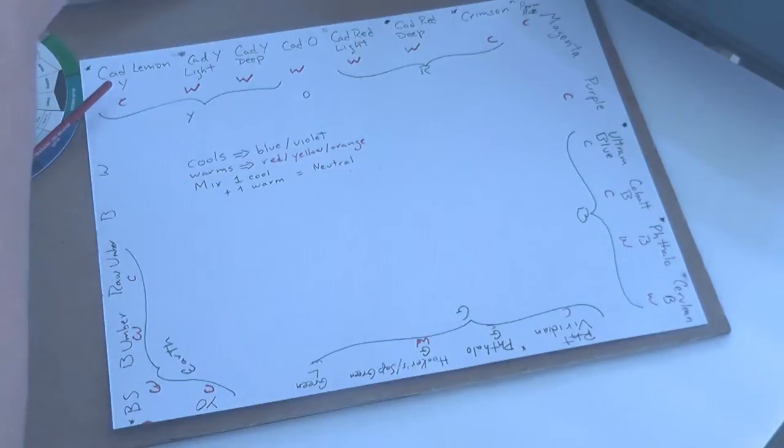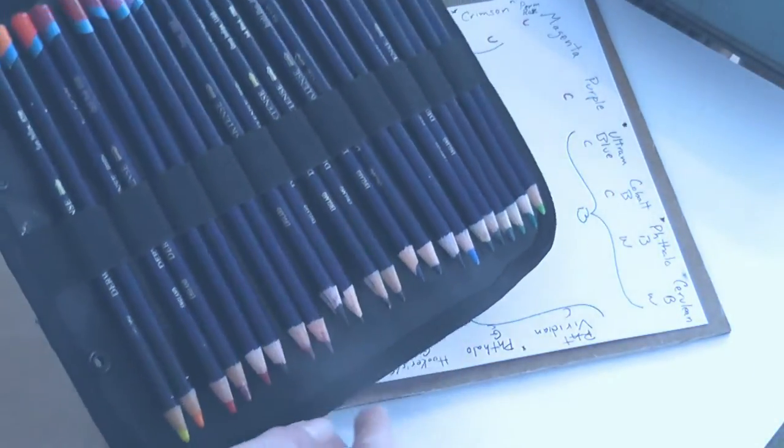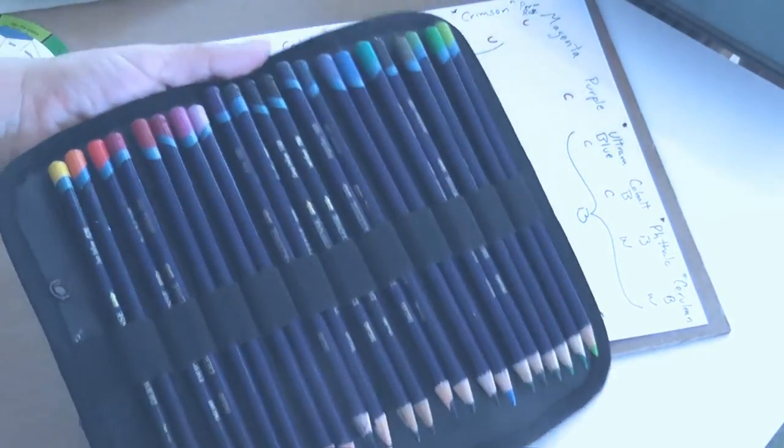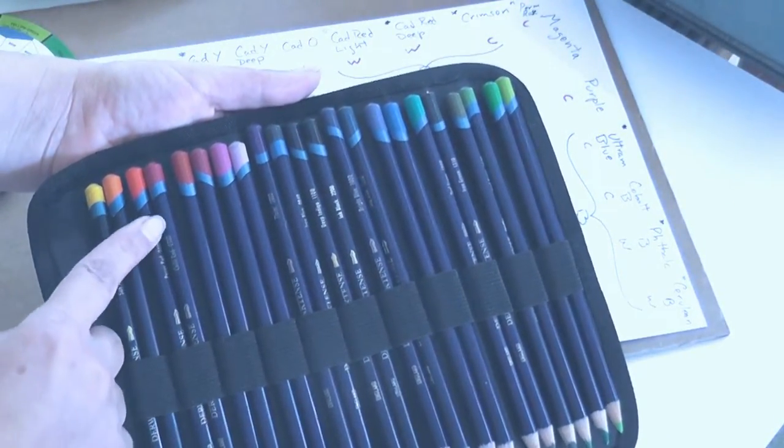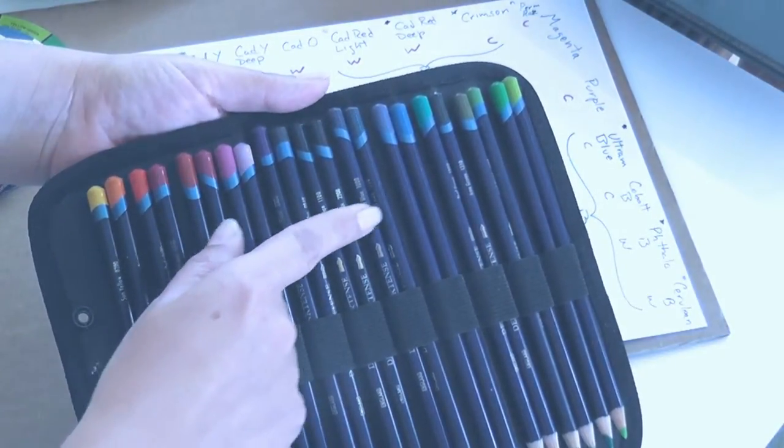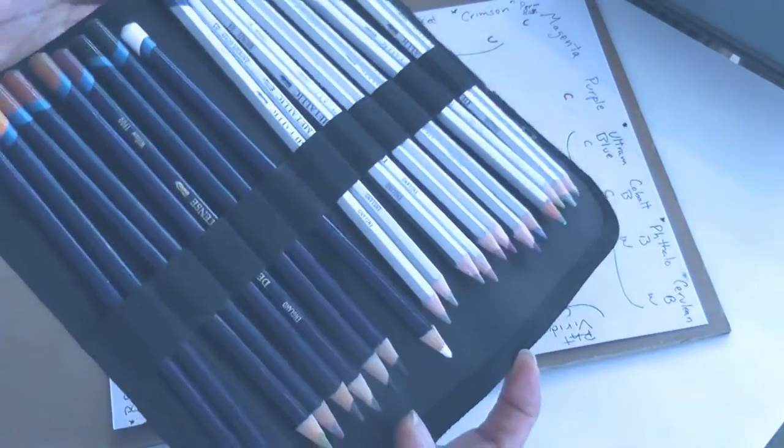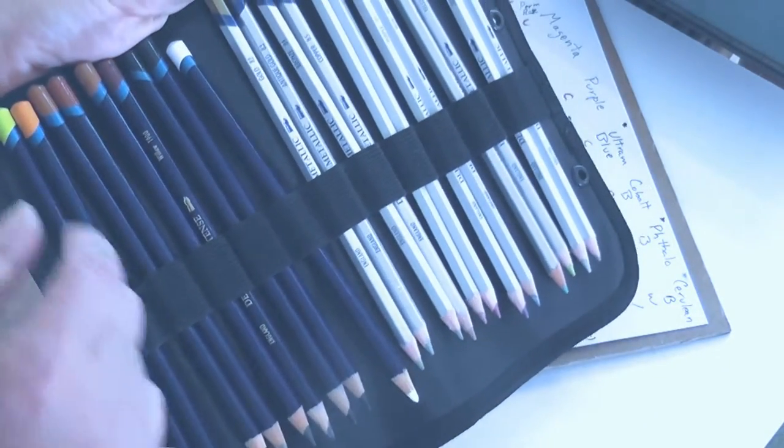It can be any kind of materials. I have other pencils too that follow the same system: yellows, oranges, reds, blues, purples, greens, then the earth colors.